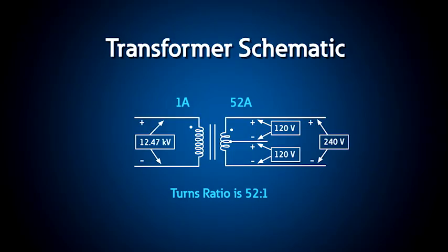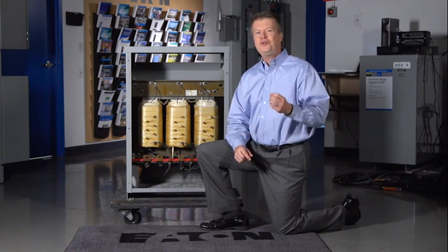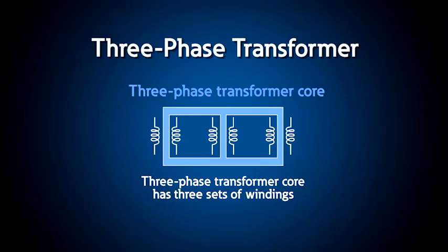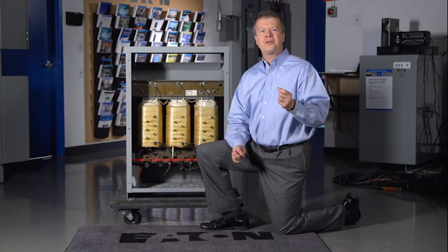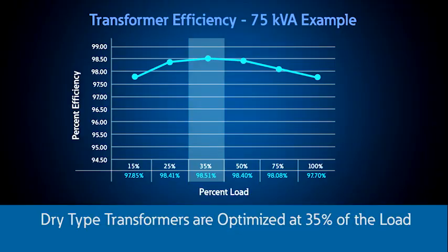For this example, the turns ratio is 52 to 1. There are two main components in a transformer: the core, and the primary and secondary windings or coils. Both the core and the windings have electrical losses, and today's modern transformers are designed to minimize these losses, optimizing them for typical load operation points.